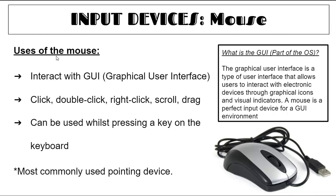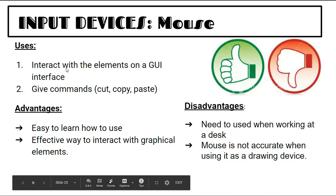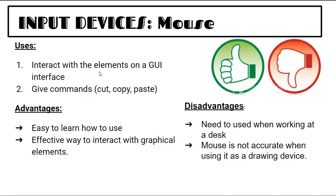The mouse is probably the second most used input device, made for interaction with your graphical user interface like Windows 10. You can click, double click, right click, scroll, and drag. A graphical user interface allows users to interact with electronic devices through graphical icons and visual indicators — you can double click an icon to open a program. The mouse is the most commonly used pointing device.